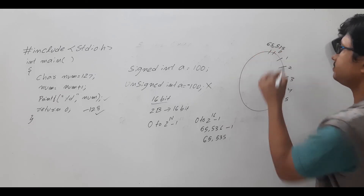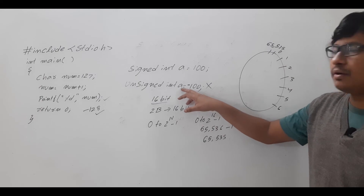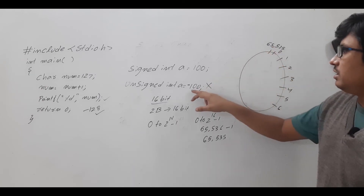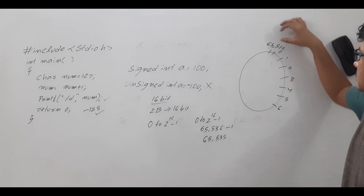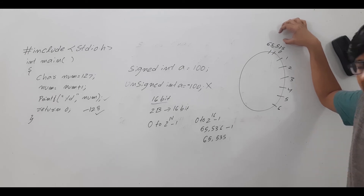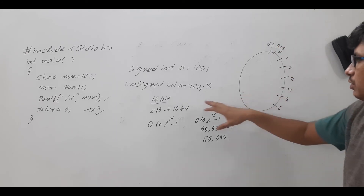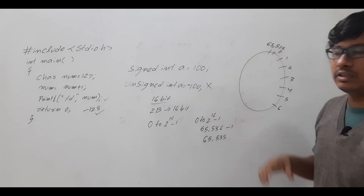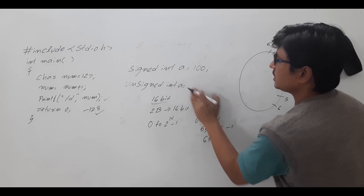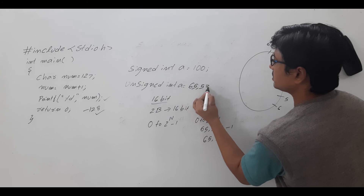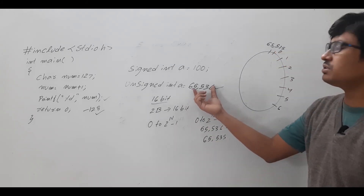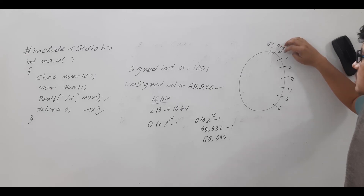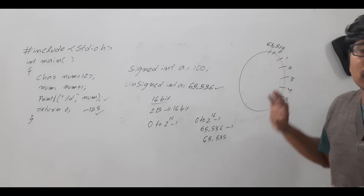The unsigned int values also work cyclically: 0, 1, 2 ... up to 65,535. If you initialize -100, it wraps around from 65,535 going backwards, giving some positive value — no error is thrown. Similarly, if you initialize 65,536, that is one beyond the maximum 65,535, so it wraps back to 0. This is how data types work cyclically when values exceed their range.